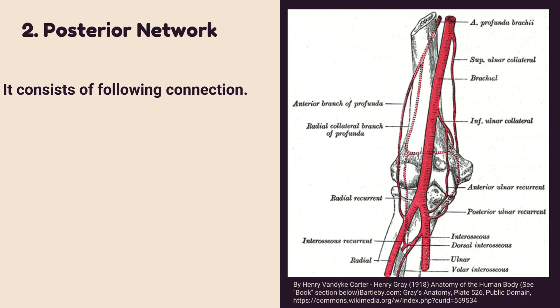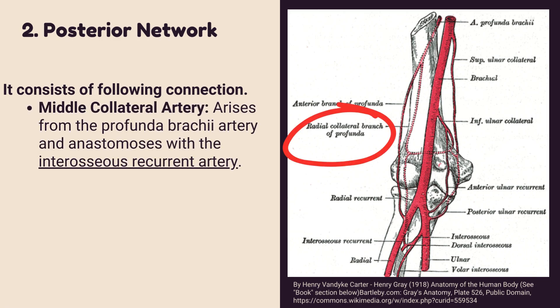The posterior network consists of the following connection: the middle collateral artery, which arises from the profunda brachii artery, anastomoses with the interosseous recurrent artery.